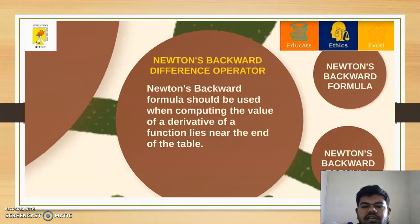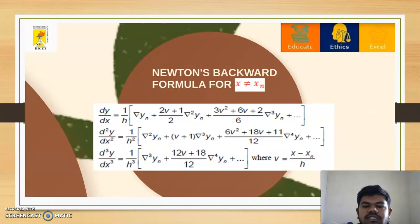Next, we will discuss Newton's backward difference operator. Newton's backward formula should be used when computing the value of a derivative of a function that lies near the end of the table — either the last value or before the last value. Last value means x = xn; before the last value means x is not equal to xn. First, we will discuss for x is not equal to xn.